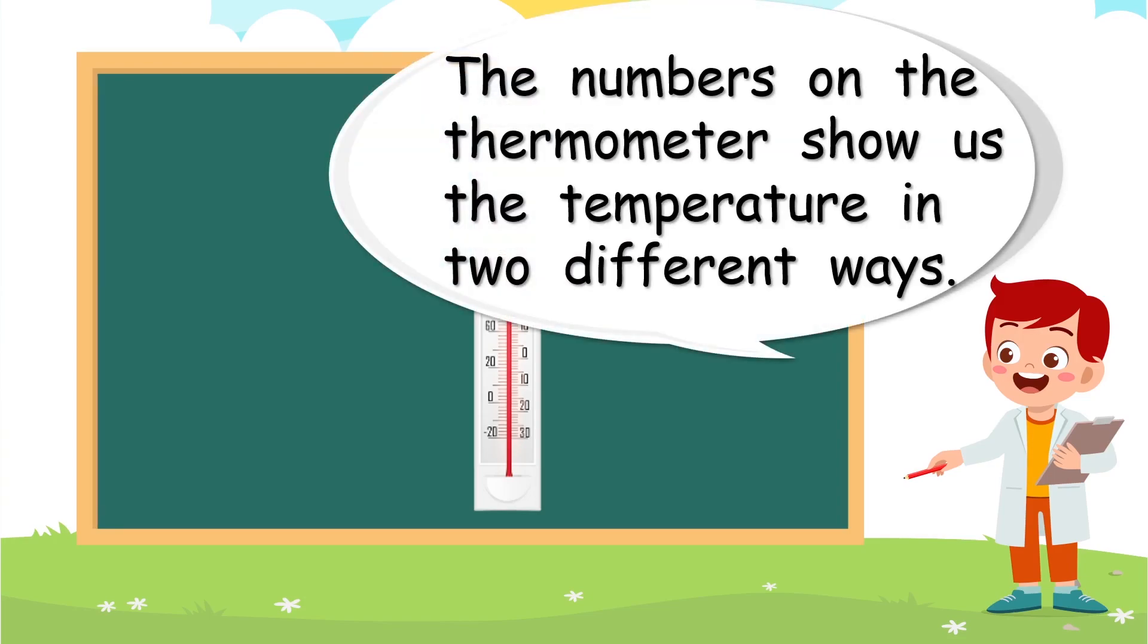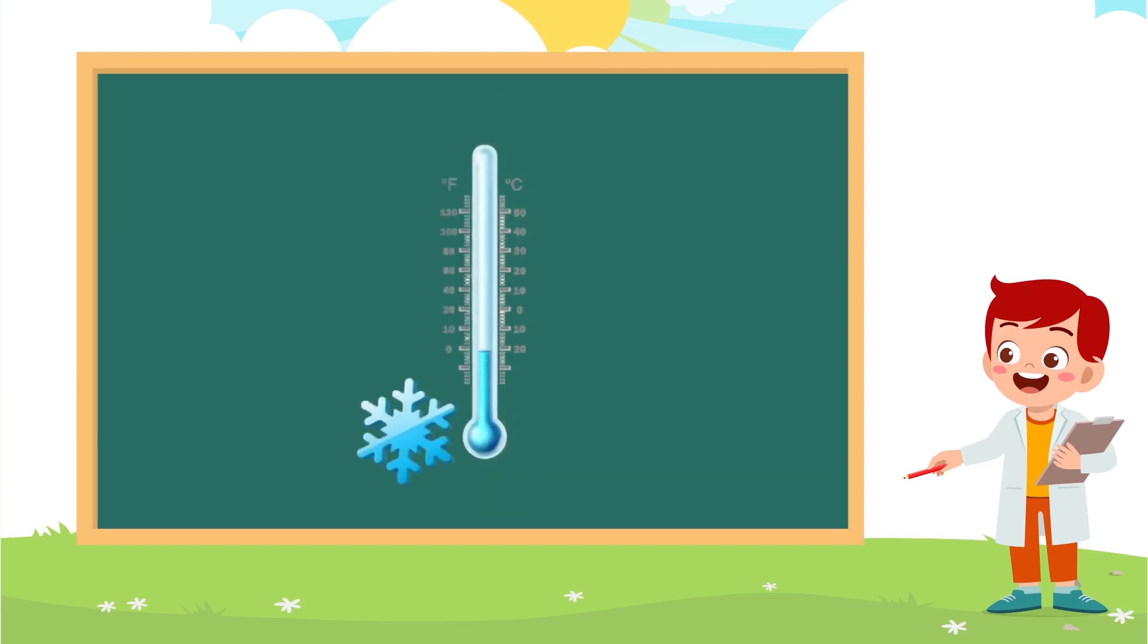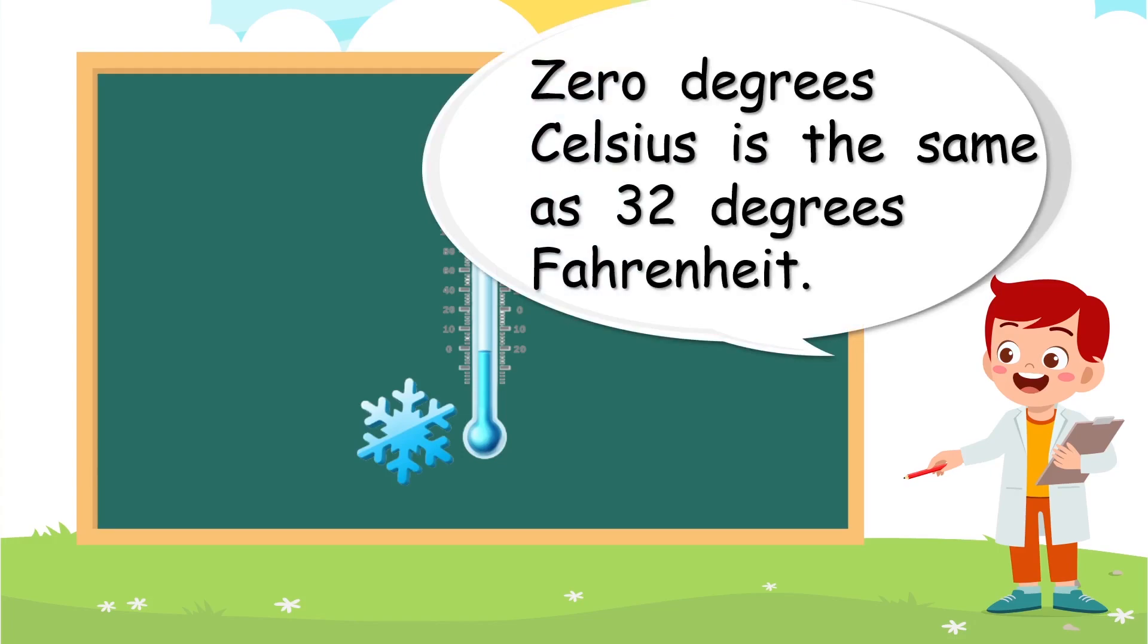The numbers on the thermometer show us the temperature in two different ways. Let's look. We've got numbers under the letter F, and we've got some different numbers under the letter C. Oh, this is a cold day. Zero degrees Celsius is the same as 32 degrees Fahrenheit.